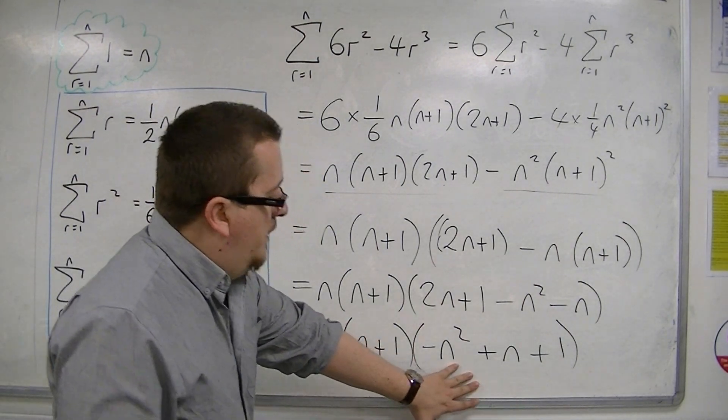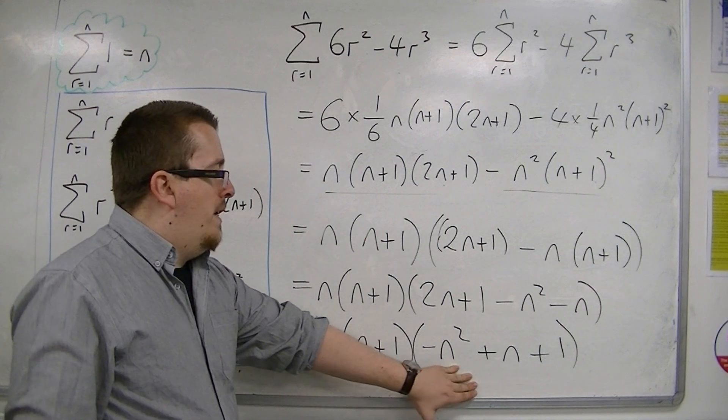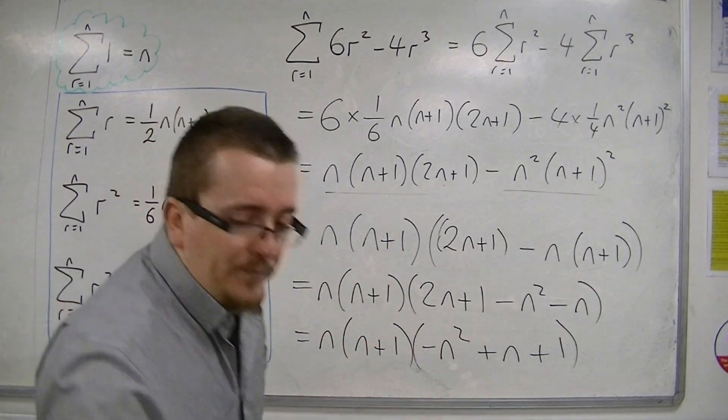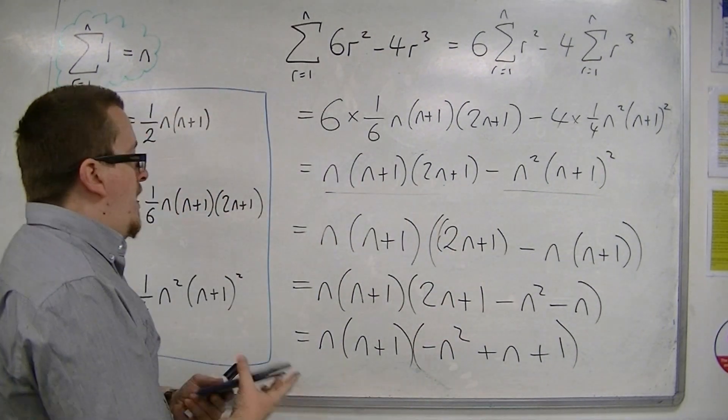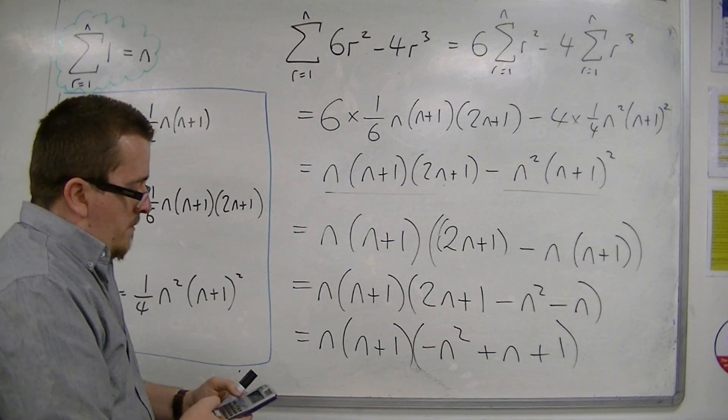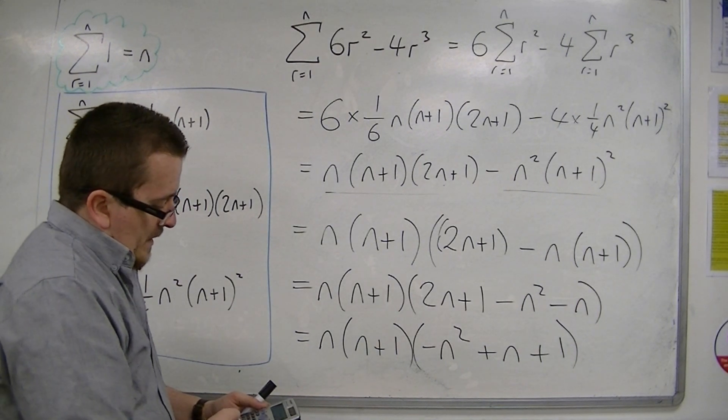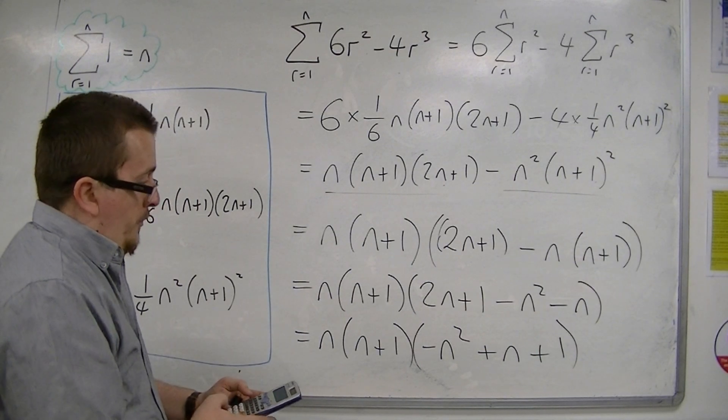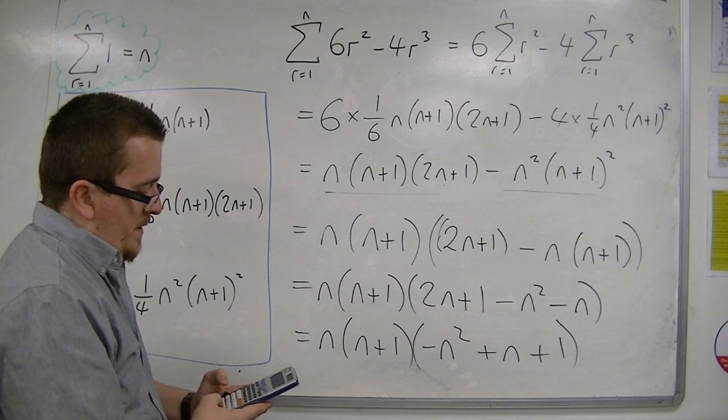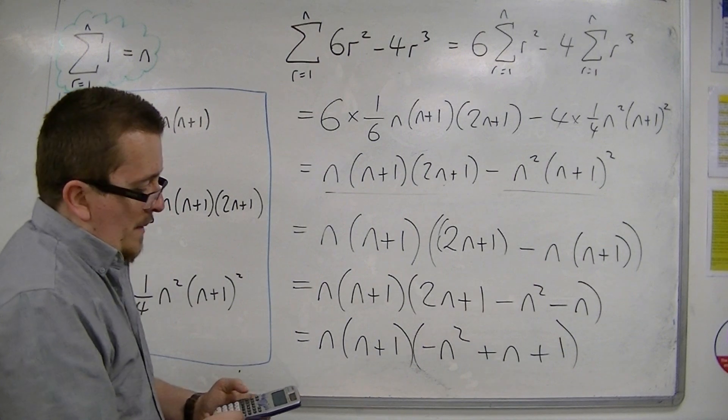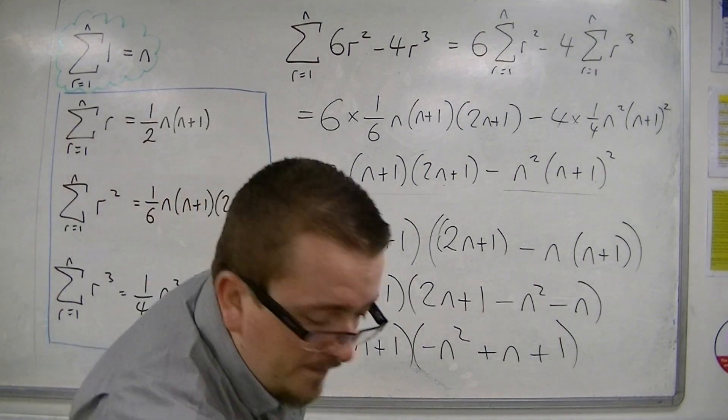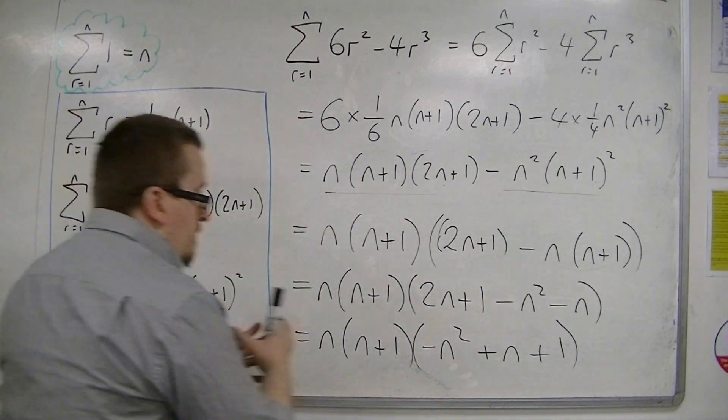So, with that, with this bracket, can it be factorised? A quick check on a calculator will allow you to do that. So, minus 1, 1, and 1. It won't factorise nicely, so I'm going to leave it just like that.